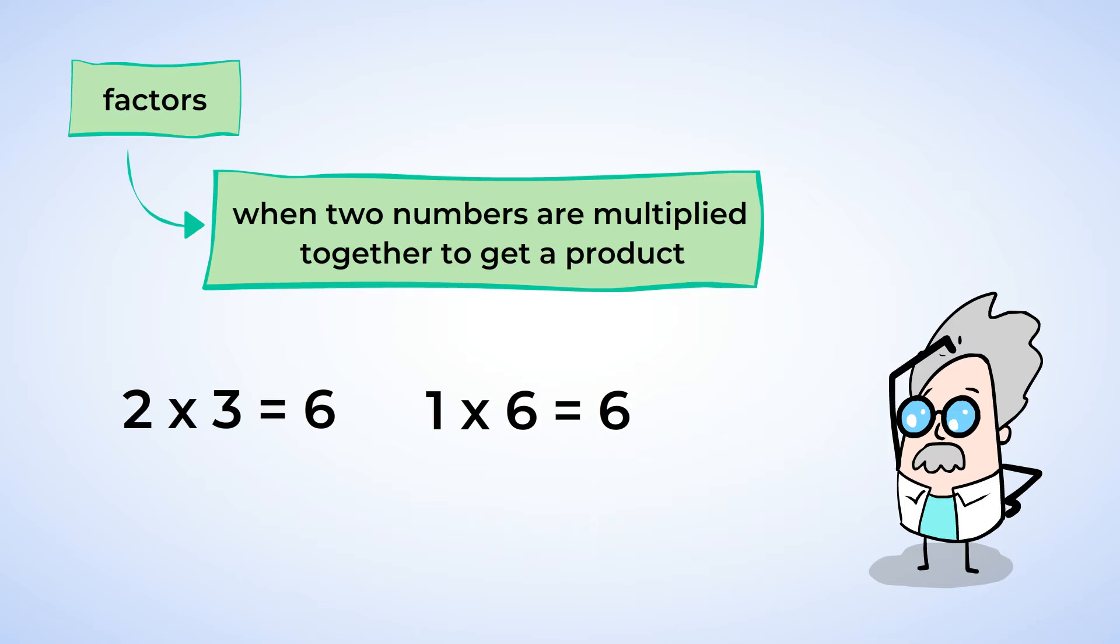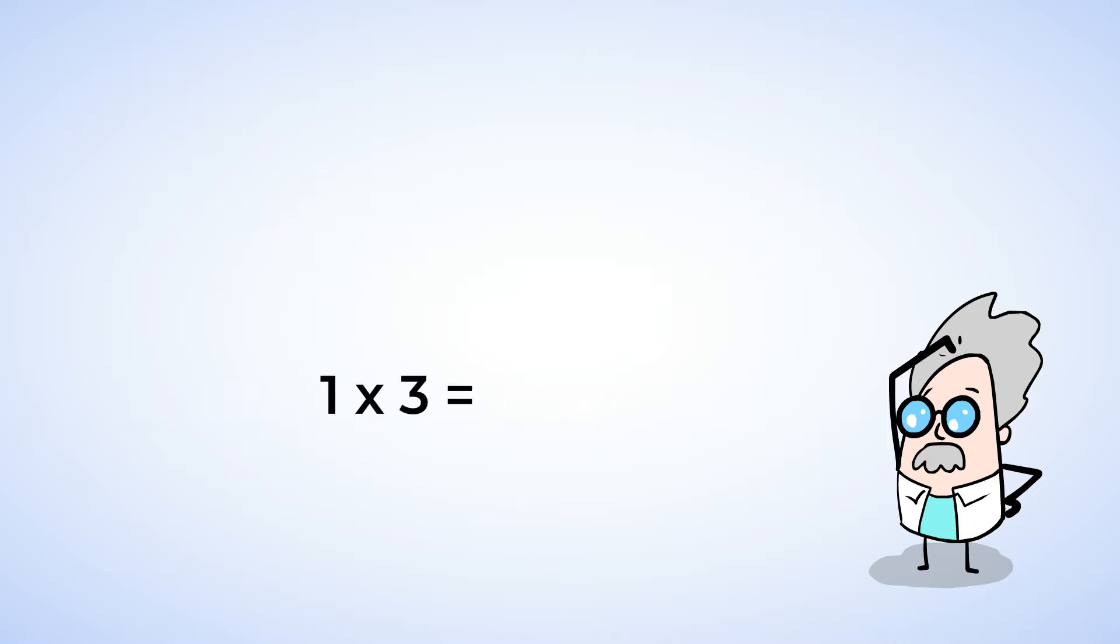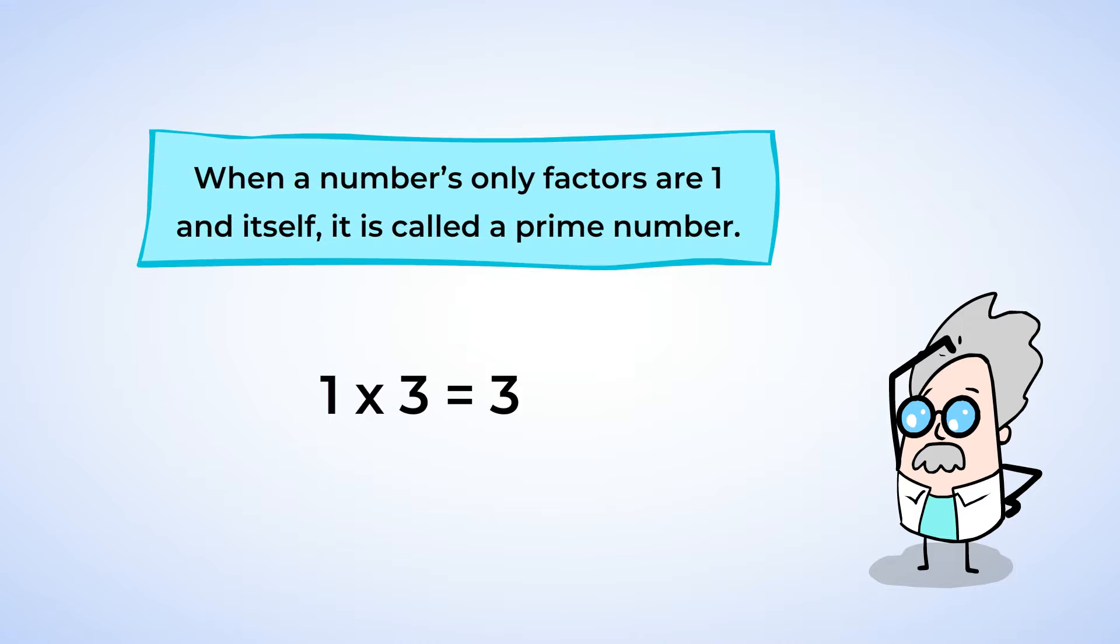What do you say we look at more numbers and their factors? What about the number 3? What numbers multiply to get 3? Well, 1 and 3 are the only factors. When a number's only factors are 1 and itself, it's called a prime number. The number 5 is another prime number, because the only way to get a product of 5 is to multiply 1 and 5.